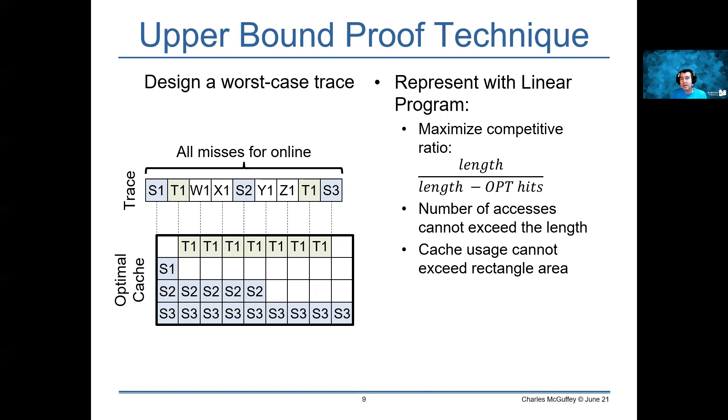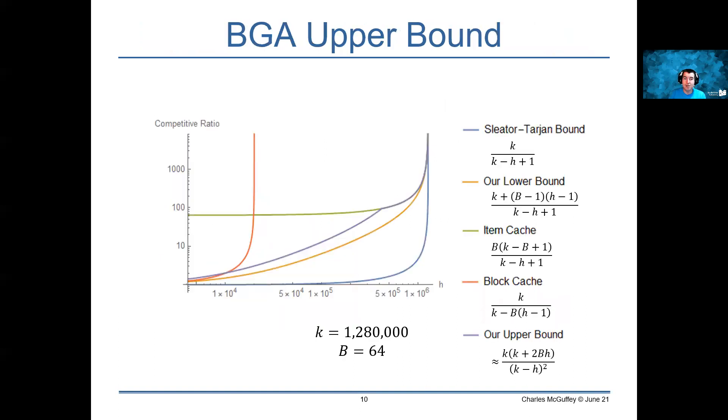In particular, with this technique we're able to show that Item Block Layered Partitioning has this upper bound in purple here on the graph, which is much closer to the lower bound than the baseline policies we compare against. For the interesting area of the curve, our upper bound's higher order terms are k times k plus 2bh over k minus h squared, which is off from the lower bound by at most a factor of 3, and often less.